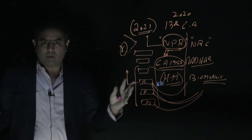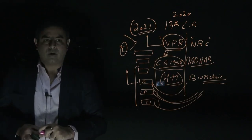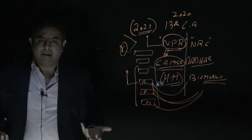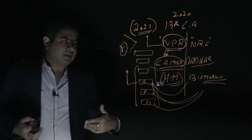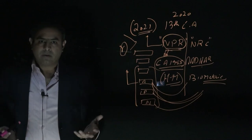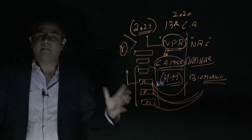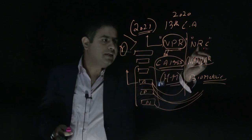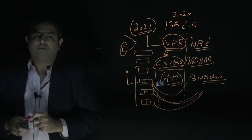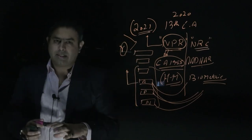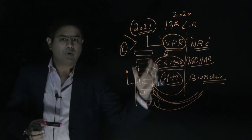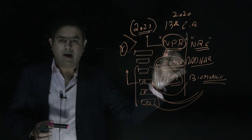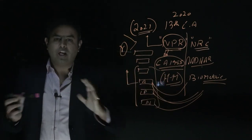One very important thing: neither Aadhaar nor NPR confers citizenship rights. It does not mean that if your name is in NPR or in Aadhaar, you are a citizen. The parameters to define citizenship are different. Just like in Assam, NRC — National Register of Citizens — was conducted, and people who were refugees living in Assam will now be removed. But NPR exercise will not be conducted only in Assam; it will be conducted across the whole country.